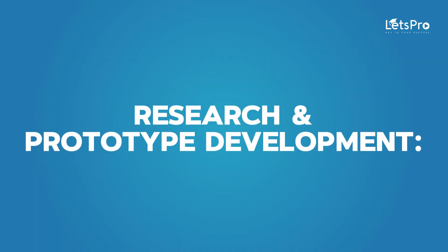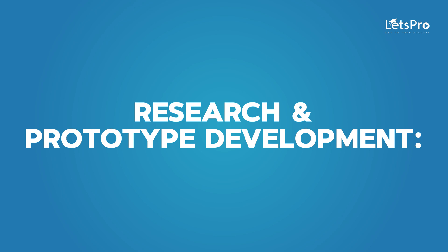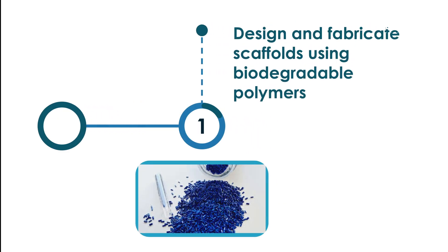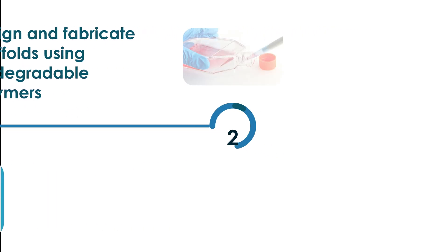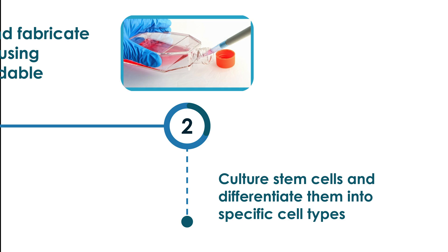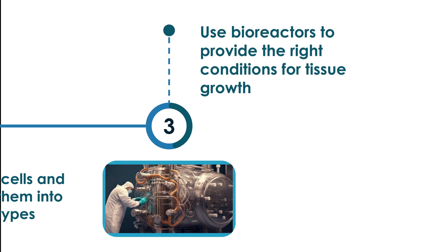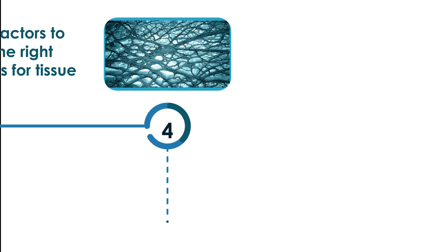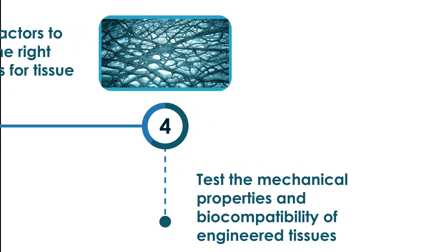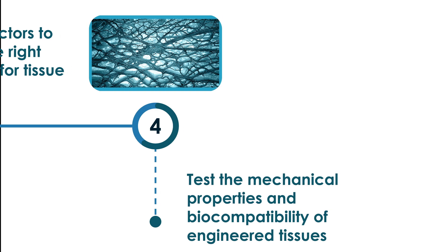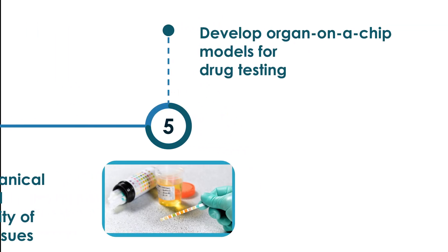For research and prototype development: design and fabricate scaffolds using biodegradable polymers; culture stem cells and differentiate them into specific cell types; use bioreactors to provide the right conditions for tissue growth; test the mechanical properties and biocompatibility of engineered tissues; and develop organ-on-a-chip models for drug testing.